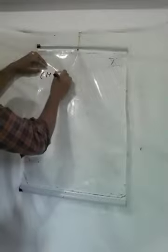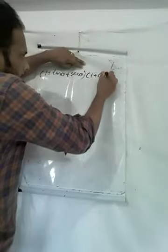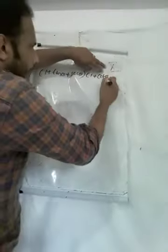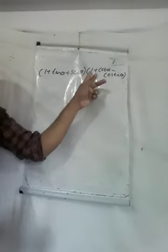Now, the next problem: (1 + tan θ + sec θ) into (1 + cot θ − cosec θ). The options given are 0, 1, 2, minus 1. You need to find the correct answer.